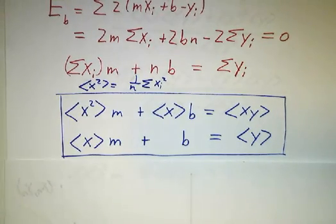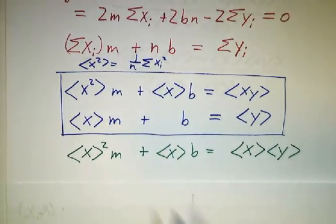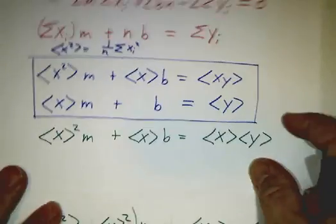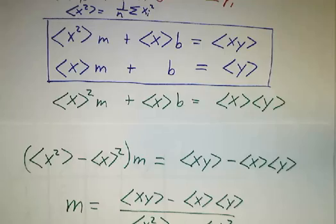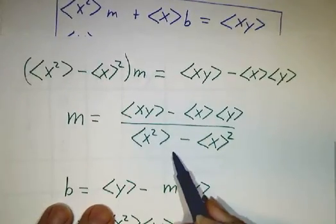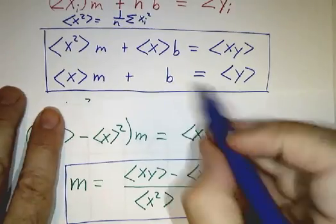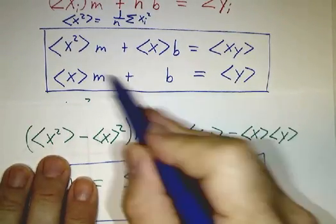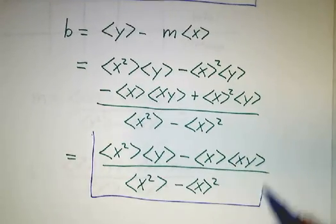And that's just two equations and two unknowns and we can solve that. If you take the second equation and multiply it by the average value of x, you get this and if you subtract that from the very first equation, you cancel out the b's and then you just solve for m and there you go. We've got our formula for m. And if you look back here, b is going to be the average value of y minus m times the average value of x and you do a little bit of algebra